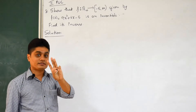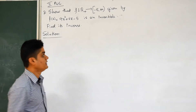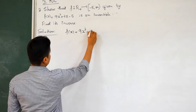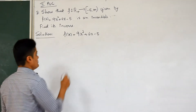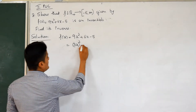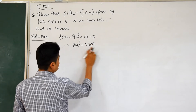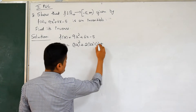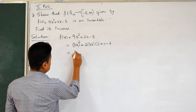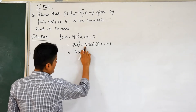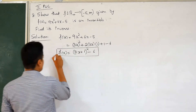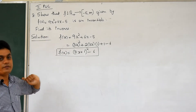The next important question — also asked in the final exam — involves f(x) = 9x² + 6x − 5. This is slightly different because you need to rearrange the expression into a perfect square. We can write: 9x² + 6x − 5 = (3x)² + 2·(3x)·1 + 1² − 6 = (3x + 1)² − 6. This rearranged form of f(x) is what we use in the procedure.